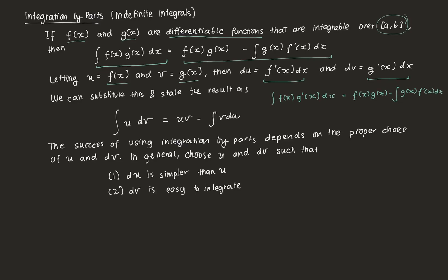So we substitute u and v here. The integral of f(x)·g'(x) dx becomes integral of u dv, which equals f(x)·g(x), that's u·v, minus the integral of g(x)·f'(x) dx, that's v du. That gives us the integration by parts formula: the integral of u dv equals u·v minus the integral of v du.